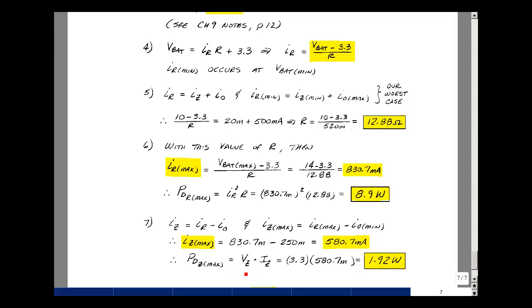Power dissipated in the Zener diode is not I squared R or V squared over R because there's no resistance. It's just simply the voltage times the current. So 3.3 volts Zener times the 580.7 milliamps would be 1.92 watts. That too is a lot of power to dissipate, but I picked a 5 watt Zener, so it would be okay on that.